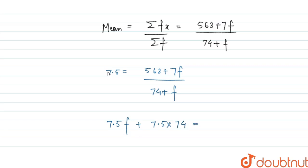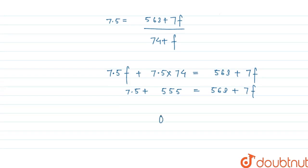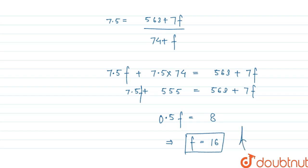After cross multiplication, we take 7.5f minus 7f, which gives 0.5f on the left side. On the right hand side we get 563 minus 555, which equals 8. So 0.5f equals 8, and therefore f is equal to 16. That is our final answer — the value of f is 16.